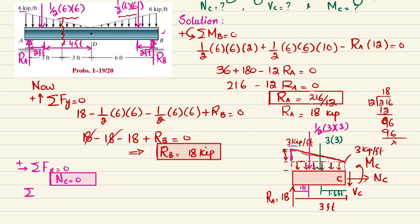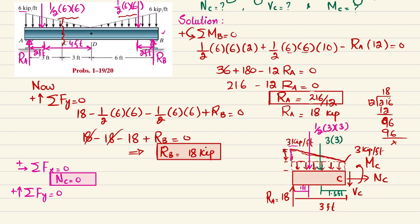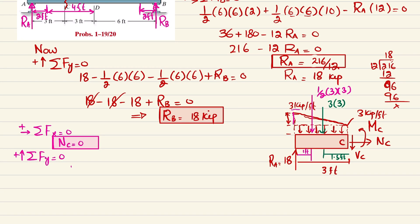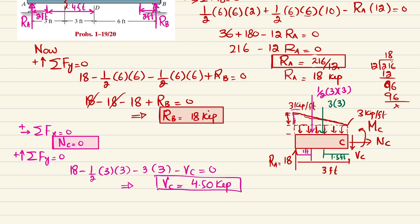Applying the second equilibrium condition: sum of all forces in the Y direction equals zero, with upward forces positive. Forces are: +18, minus (1/2)(3)(3), minus (3)(3), minus VC equals zero. So: 18 minus 4.5 minus 9 minus VC equals zero, giving VC equal to 4.5 kips.